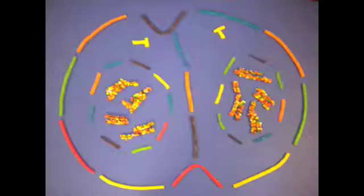At the beginning of telophase I, each half of the cell has a complete haploid set of replicated chromosomes. Each chromosome is composed of two sister chromatids. One or both chromatids include regions of non-sister chromatid DNA. Cytokinesis usually occurs simultaneously with telophase I, forming two haploid daughter cells. In animal cells, a cleavage furrow forms.